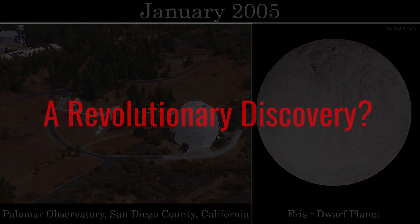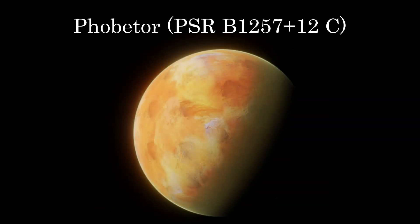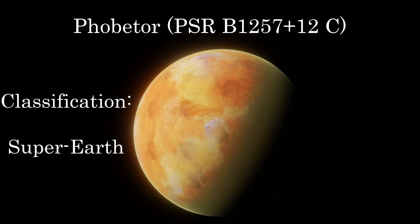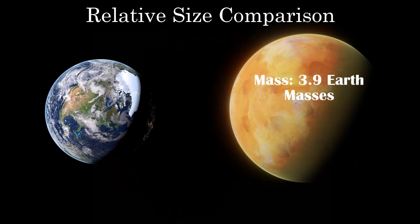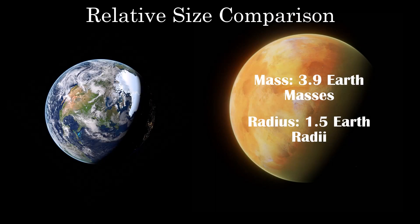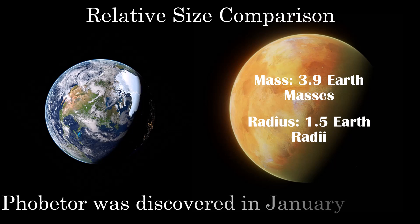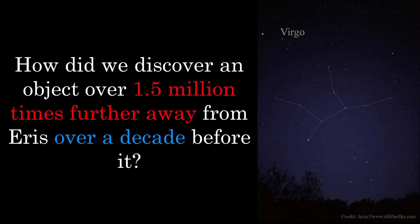Or was it? Turn your attention to Phobetor, a super-Earth-type planet which orbits a star over 2,300 light-years away. Phobetor isn't anything special, but here's the twist. Phobetor was also discovered in January, the January of 1992. That's 13 years before the announcement of Eris. How was a fairly average exoplanet all the way in the Virgo constellation discovered over a decade before Eris, the ninth most massive known object orbiting our own Sun?